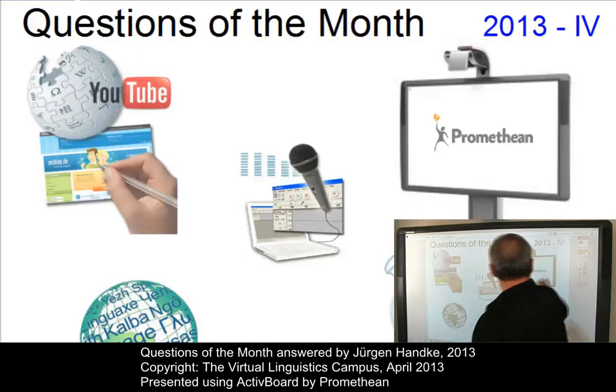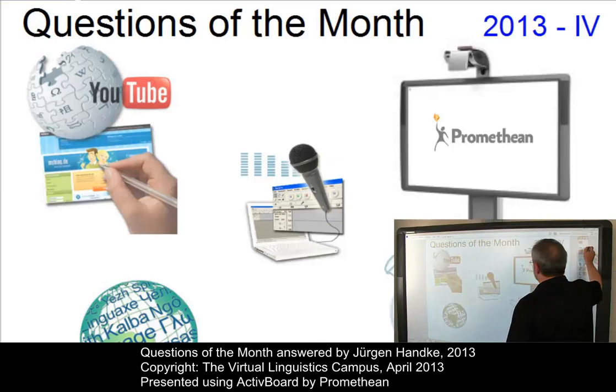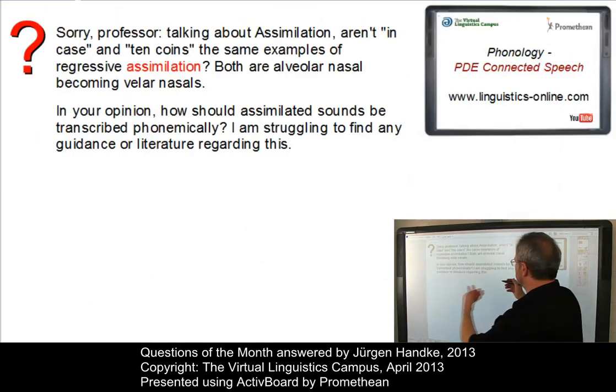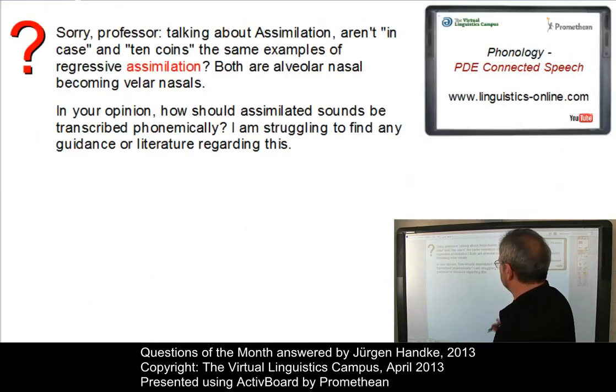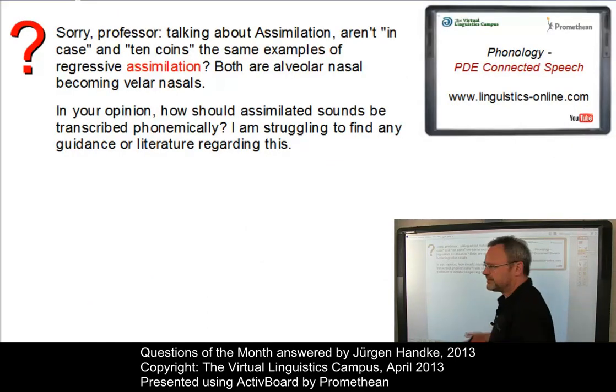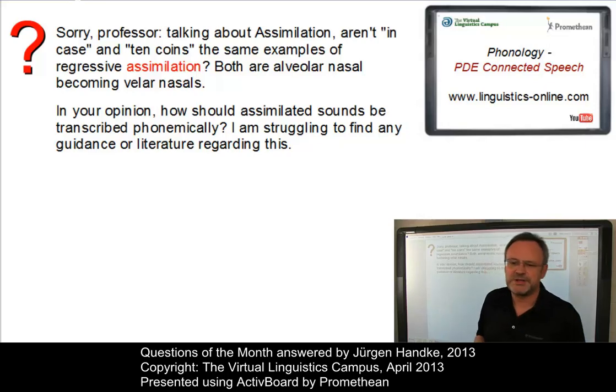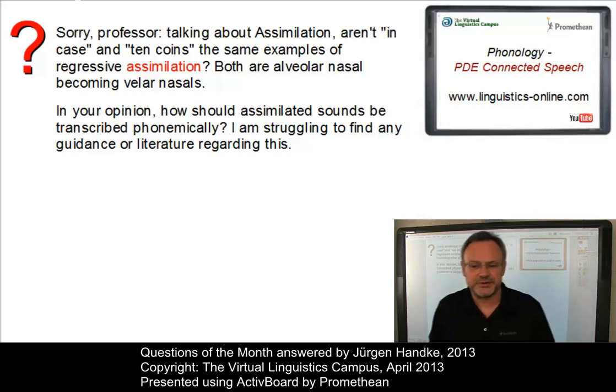Here is the first problem, which consists of two parts. The first is about regressive assimilation and the second about assimilation in general.